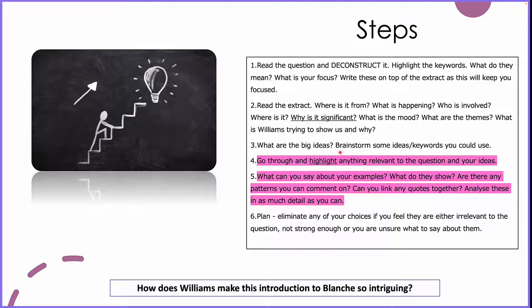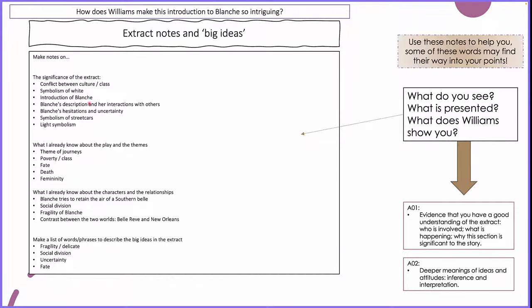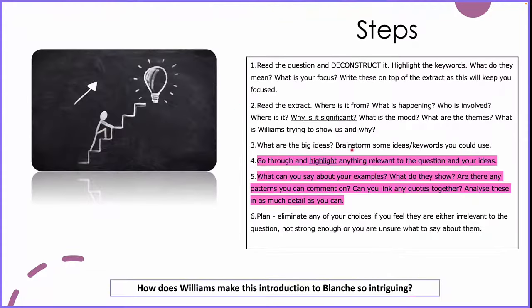Step four is where we go back to the extract and highlight anything relevant to the question and to the ideas we've already generated. You can see I've gone through and made lots of different notes on the significance of the extract, what I already know about the play, and what I already know about the characters. I've also got a list of words to describe the big ideas, which will become important later — and you can look for these when you return to the extract.